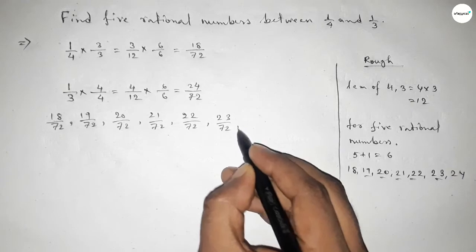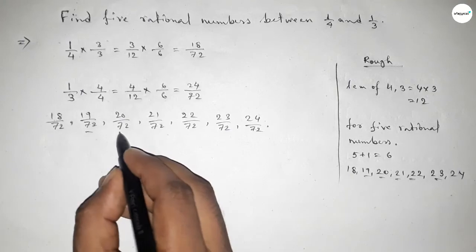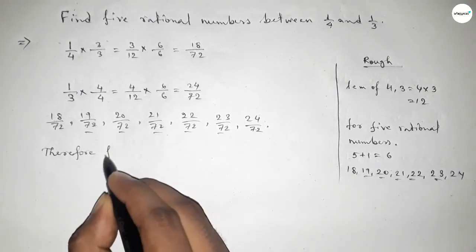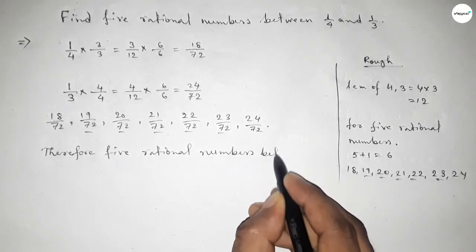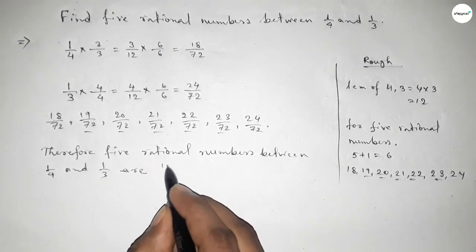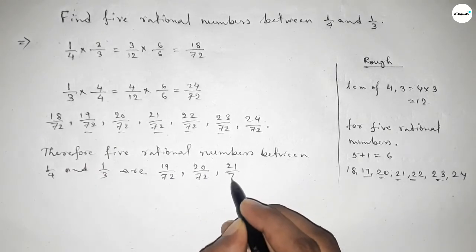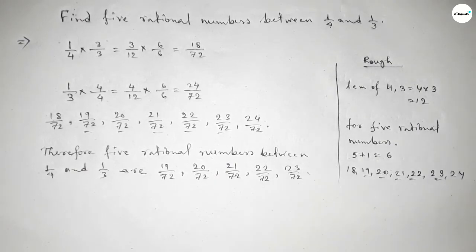The required five rational numbers between 1 over 4 and 1 over 3. Therefore, five rational numbers between 1 over 4 and 1 over 3 are: first one is 19 over 72, 20 over 72, to last one 23 over 72. So this is the process to find out five rational numbers between 1 over 4 and 1 over 3.